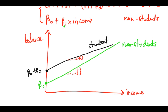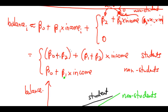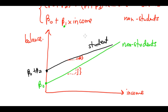For example, the slope for students may be lower than for non-students, showing that increases in income are associated with a smaller increase in credit balance for students compared to non-students. This is why the interaction term with qualitative data makes the results more meaningful — it is unrealistic to assume the same income change always leads to the same change in balance.